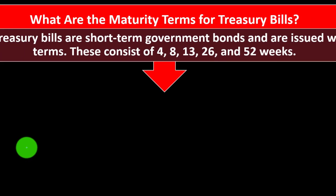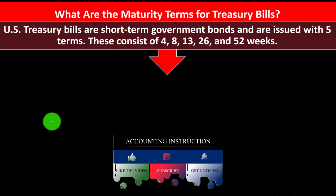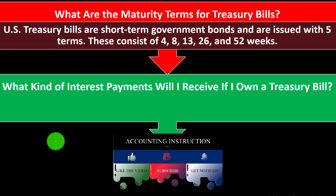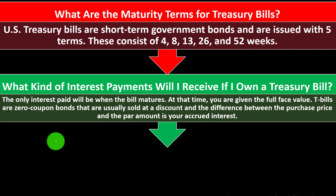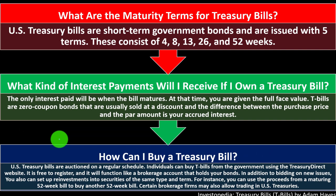What are the maturity terms for Treasury Bills? U.S. Treasury Bills are short-term government bonds issued with five terms: 4, 8, 13, 26, and 52 weeks. What kind of interest payment will I receive if I own a Treasury Bill? The only interest paid will be when the bill matures — you won't get semi-annual payments; you get it at the maturity date in the form of the face amount being higher than what you paid for it. T-bills are zero-coupon bonds that are usually sold at a discount, and the difference between the purchase price and the par amount is your accrued interest. You can also set up reinvestments into securities of the same type and term.